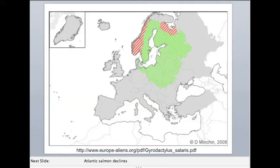Atlantic salmon are found in lots of different areas in Europe and they tend to have different strains, meaning they're locally adapted to a specific area and its specific conditions. This also means that if there's not a lot of gene flow between Atlantic salmon in different areas, it's not necessarily the case that all of them will be able to resist the same parasites. It can be the same species, but if it hasn't encountered a parasite in an evolutionary sense for a long time, it might not have any immune defenses to fight it.